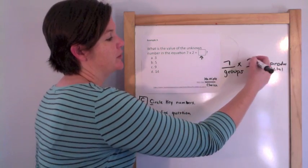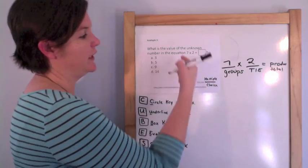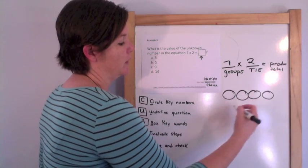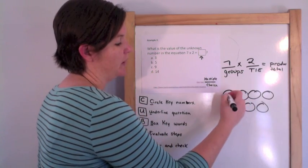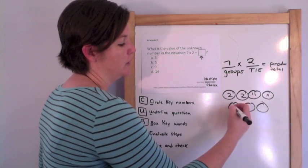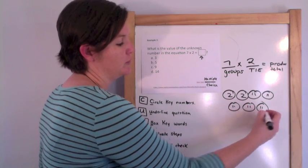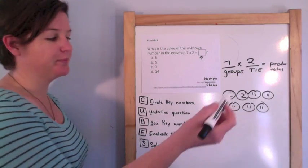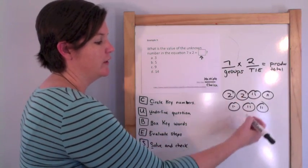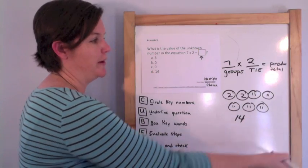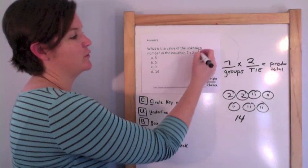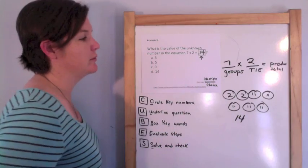Drawing out 7 groups of 2: counting gives us 2, 4, 6, 8, 10, 12, 14. So 14 total. My product is 14, and therefore my unknown number is 14.